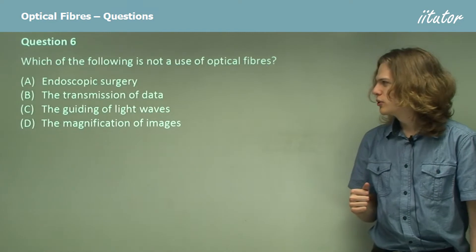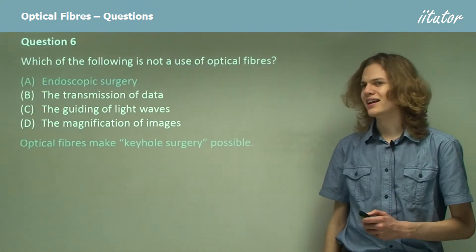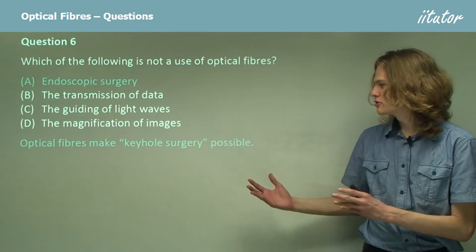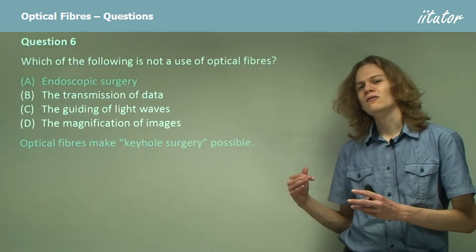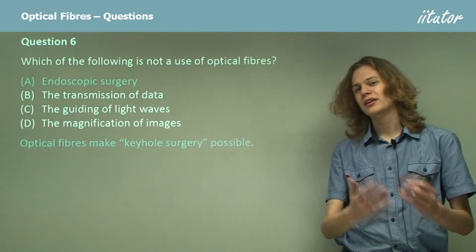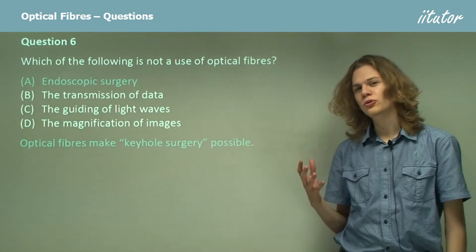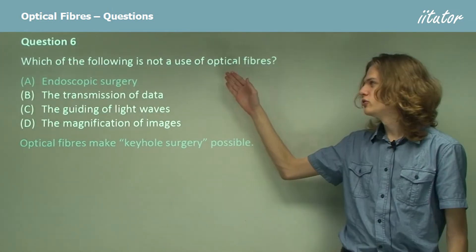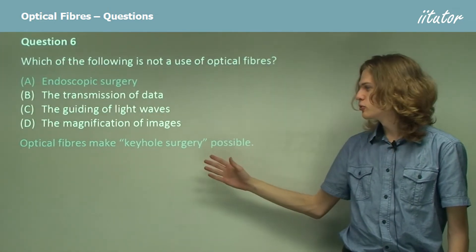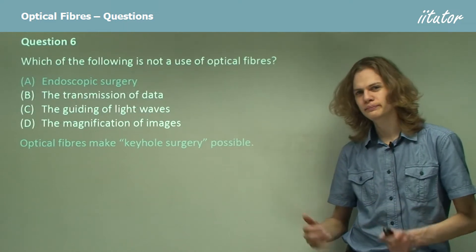So we have a few options. Let's go through them. Option A: endoscopic surgery. In an endoscope we need to have a way of getting light into the cavity and a way of getting light out. In an endoscope, both of those will be using optical fibers. So optical fibers in this case make keyhole surgery possible.